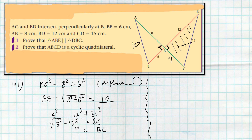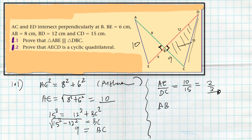Now we calculate the ratios of corresponding sides. AE over DC equals 10 over 15, which simplifies to 2 over 3. AB over DB equals 8 over 12, which also simplifies to 2 over 3.